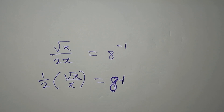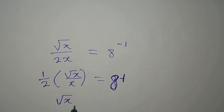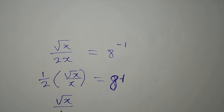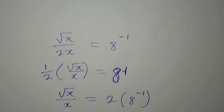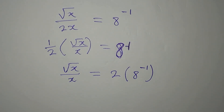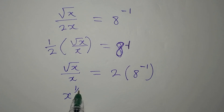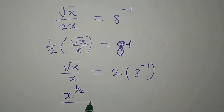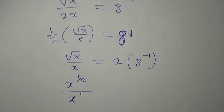We can multiply both sides by 2, so we have square root of x over x equals 2 times 8 to the power of negative 1. These are the same thing. Now, square root of x is x to the power of 1 over 2, and the denominator is x to the power of 1.